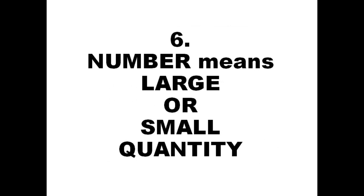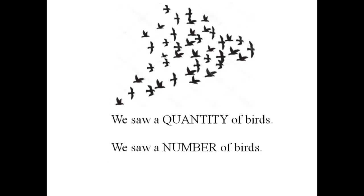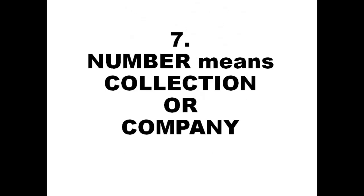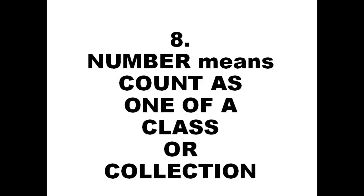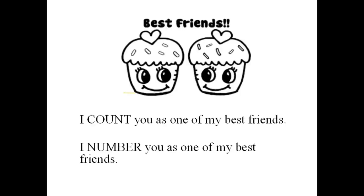Number means large or small quantity. We saw a quantity of birds — we saw a number of birds. Number means collection or company: I don't know the collection of saints — I don't know the number of saints. Number means count as one of a class or collection: I count you as one of my best friends — I number you as one of my best friends.